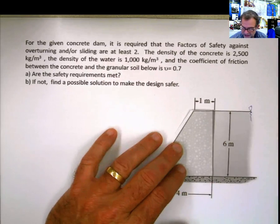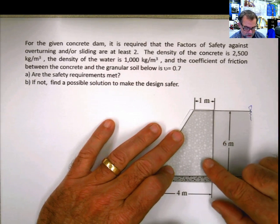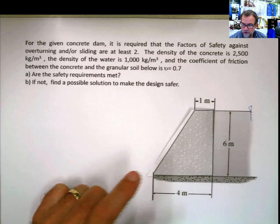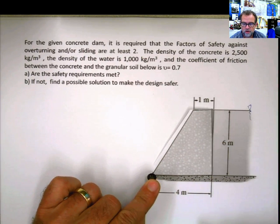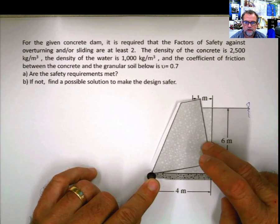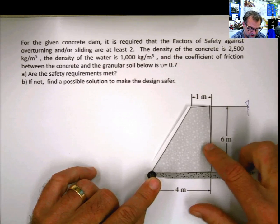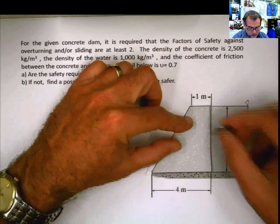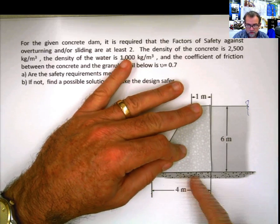Sliding is just that — because the water is pushing the dam, the dam might slide, and if it does that, it's failing. The overturning, if this is going to overturn due to the water, the overturning has to happen with respect to the toe point. So if the water pushes it that way, that's what is going to happen. Sliding is the horizontal force from water versus friction force at the base.